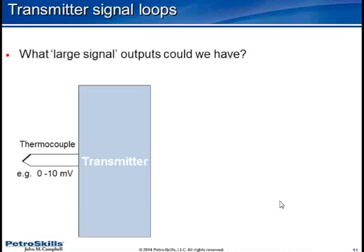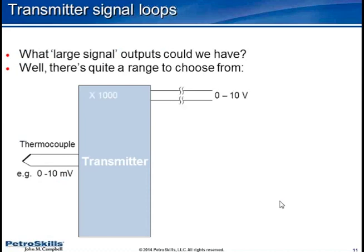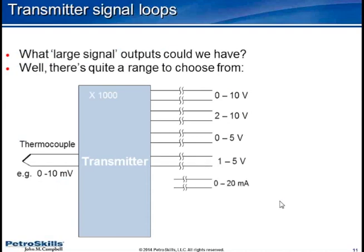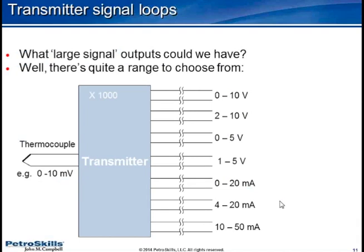So I've got a wide range of signals we could have. Over the years, a whole pantheon of different outputs have been devised: 0 to 10 volts, 2 to 10 volts, 0 to 5 volts, 1 to 5 volts, 0 to 20 milliamps, 4 to 20 milliamps, and 10 to 50 milliamps. These were all standards at one time. They finally standardized on the 4 to 20 milliamps only in 1975. It took many years of arguing to finally standardize.